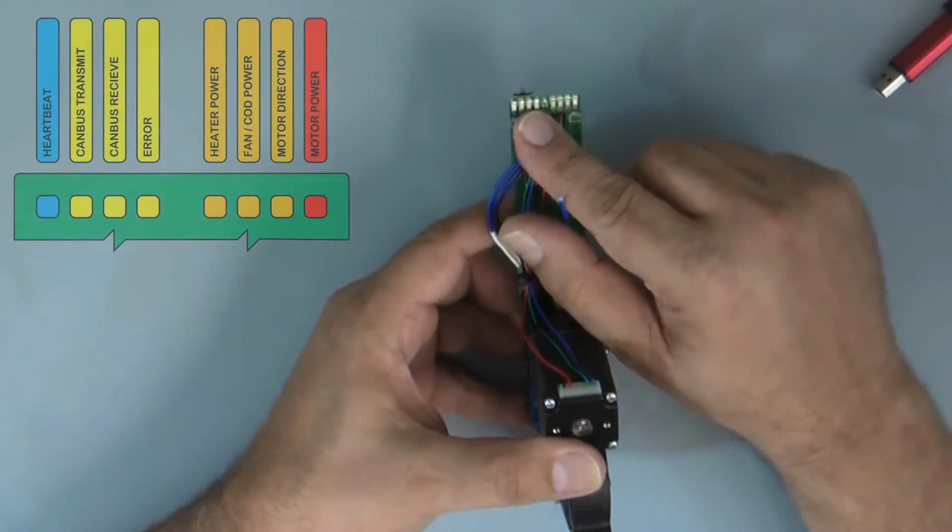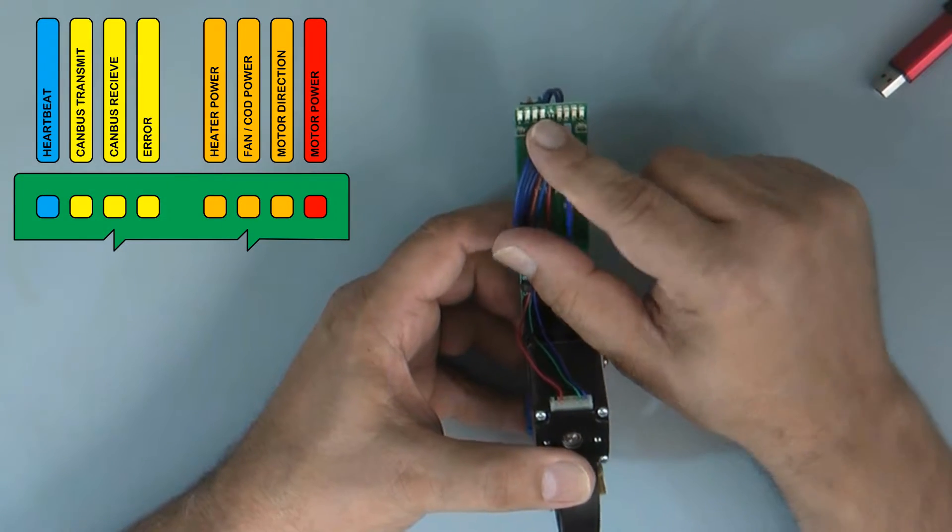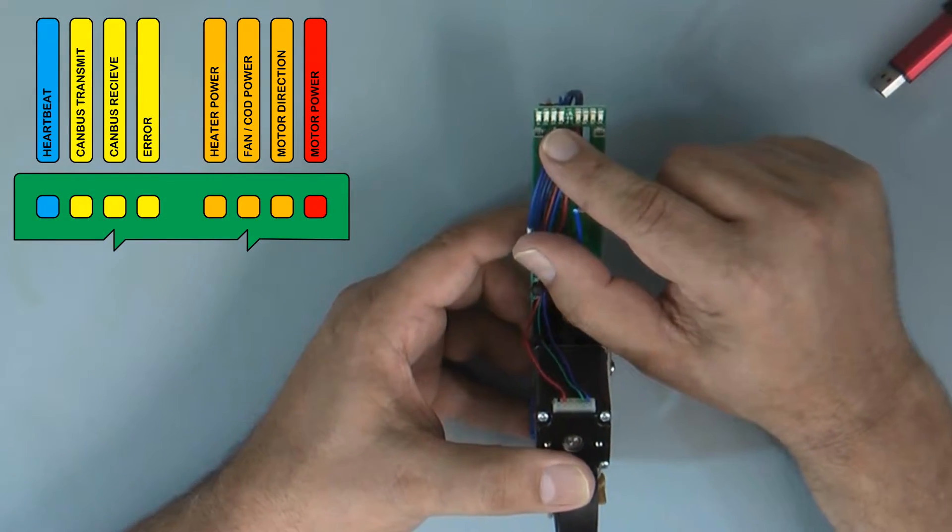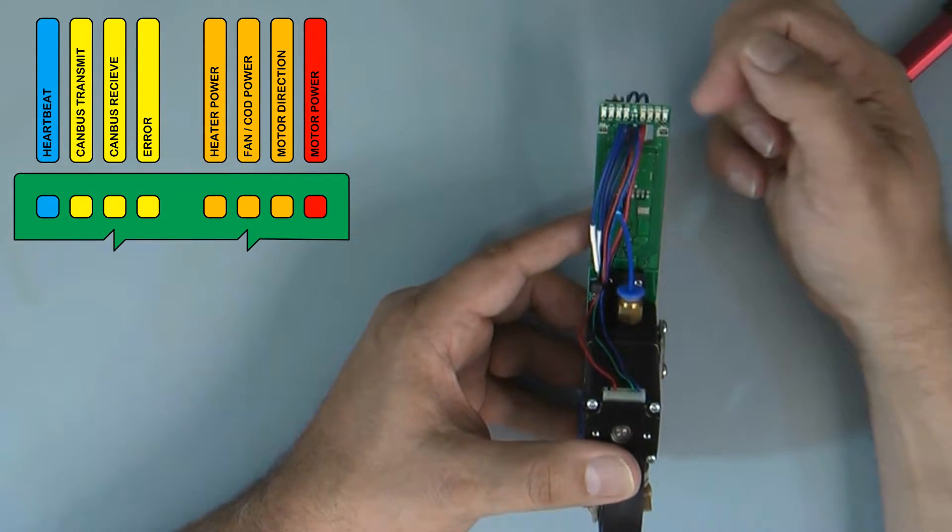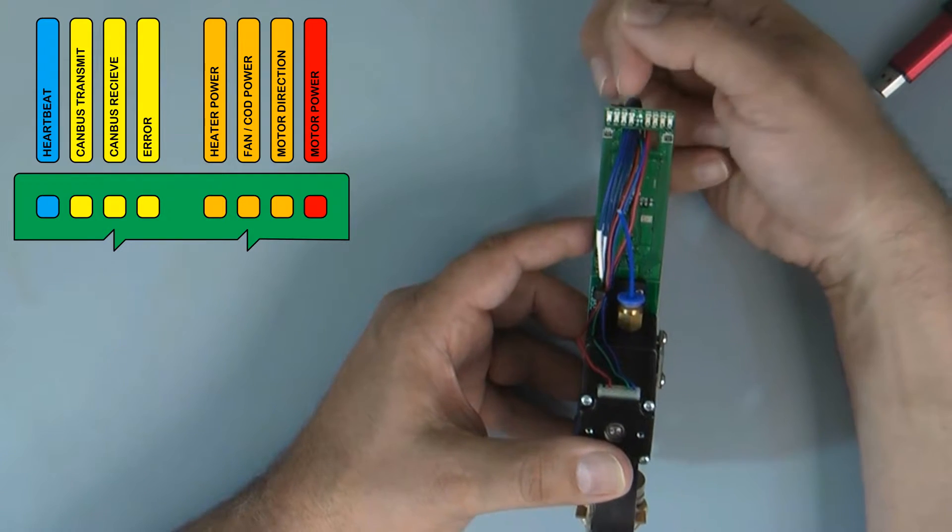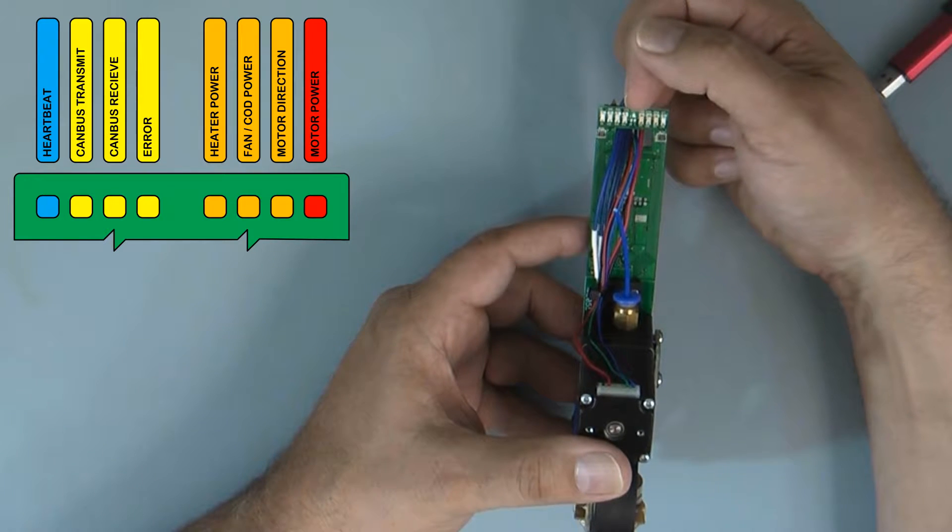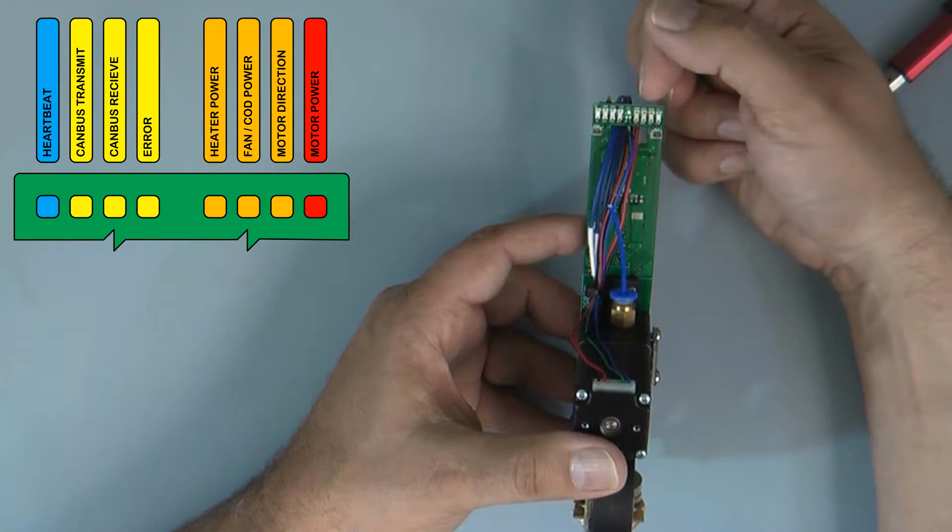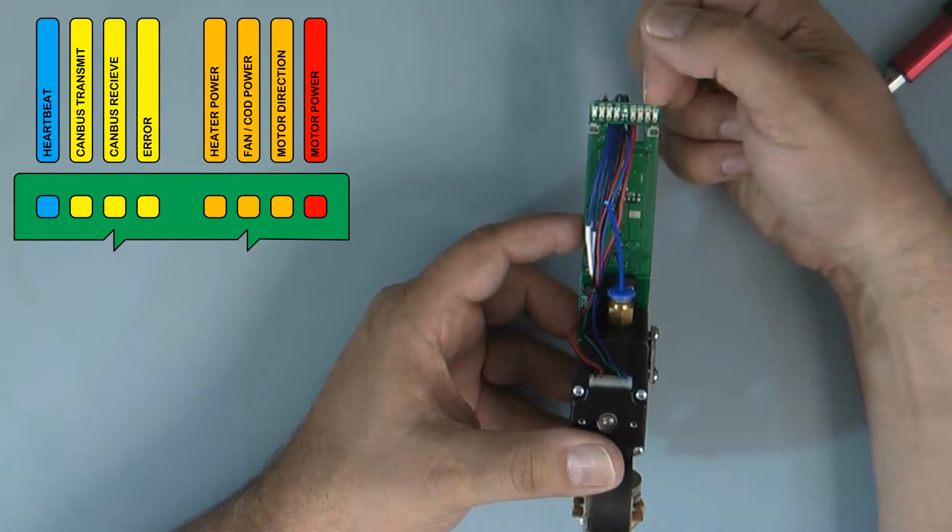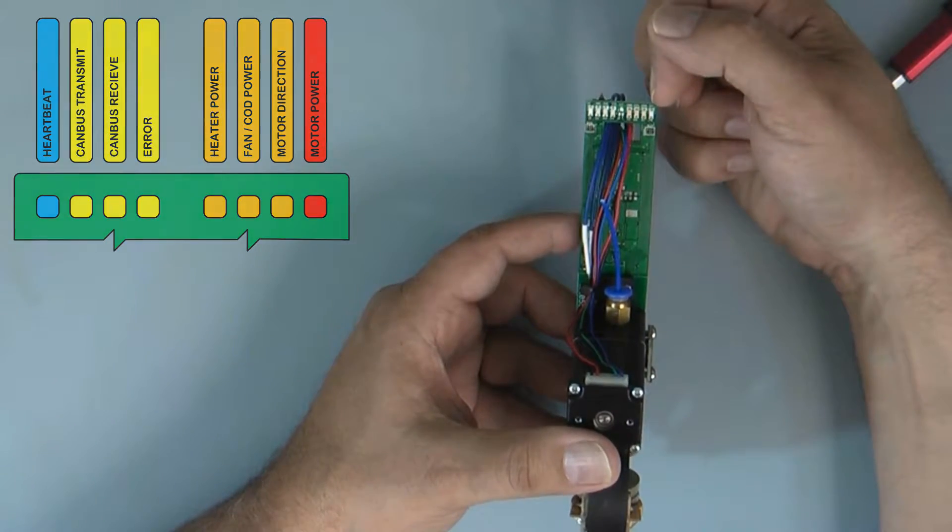Now we have all these LEDs on top, which give you a status. And if you look at the graphic on the side of the screen, that'll tell you which LEDs, basically this is a heartbeat, this is communication, transmit and receive. This is, I think this one's the error light. This is heating, the fan, direction of movement and power for movement.